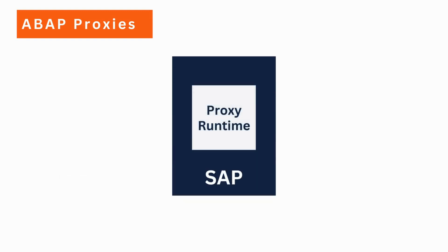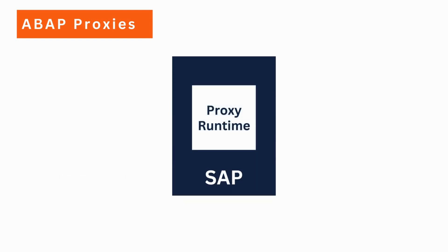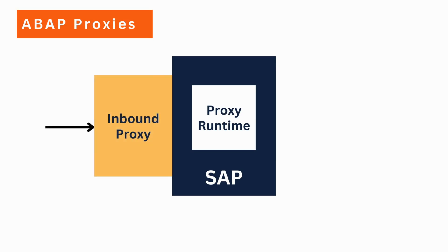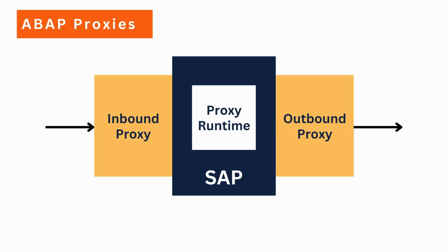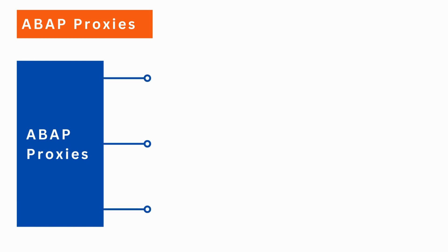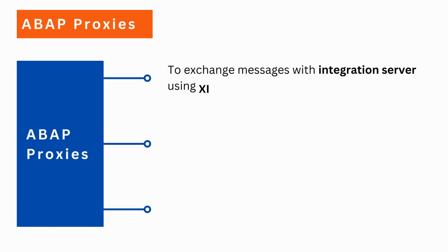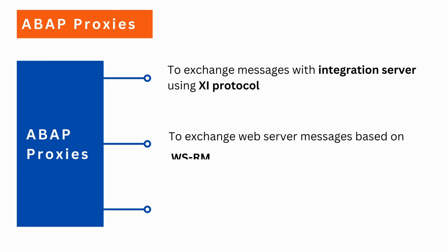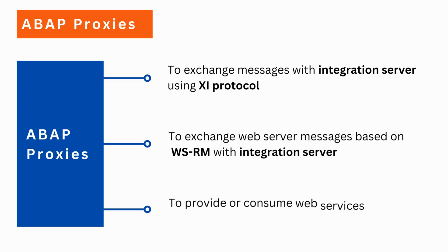SAP system provides a proxy runtime which can support both inbound proxy and outbound proxy communication. We can use ABAP proxies in three scenarios: to exchange messages with an integration server using XA protocol, to exchange web service messages based on WS runtime with an integration server, and to provide or consume web services in the ABAP application layer without SAP PI.